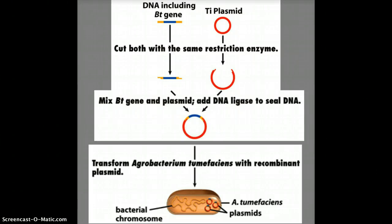This example is making a transgenic plant. This is only one way to make a transgenic plant, but this is done really often.